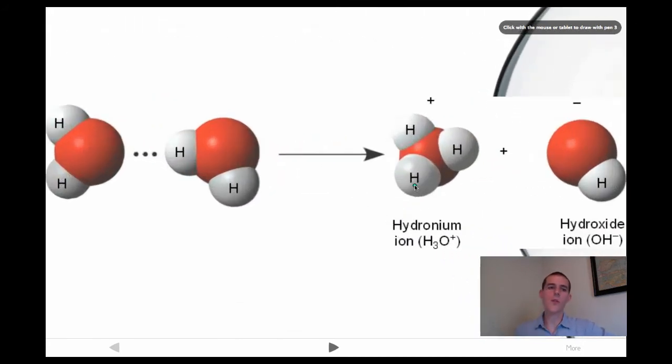In our last video, we talked a little bit about hydrogen bonding between water molecules. They're always forming these weak bonds between the negative oxygen and the positive hydrogen. When these weak bonds break, sometimes our poor little hydrogen gets left behind. When that happens, we get two different atoms that result.